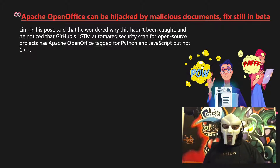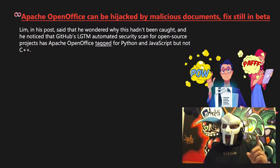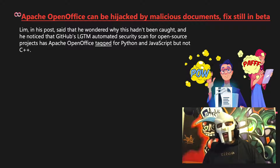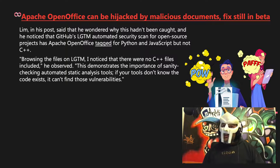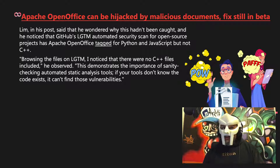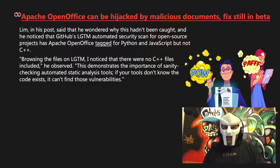Lim in his post said that he wondered why this hadn't been caught, and then he noticed that GitHub's LGTM automated security scan for open-source projects has Apache OpenOffice tagged for Python and JavaScript, but not C++. Browsing the files on LGTM, he noticed there were no C++ files included. This demonstrates the importance of sanity-checking automated static analysis tools — if your tools don't know the code exists, it can't find these vulnerabilities.